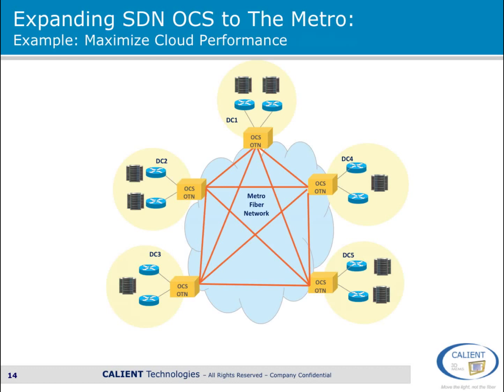Moving into the metro area, the applications are quite similar — here we're talking about interconnecting cloud data centers and POPs. Some of the capabilities of optical circuit switching together with SDN are rapid service provisioning and reconfiguration, and dynamic network optimization. For example, opening up high bandwidth to a specific site in a content distribution network while content is transferred, or for data replication between data centers. The benefit, as in the data center examples, is to allocate fiber capacity where it is most needed on demand — basically to make the best use of network investments.